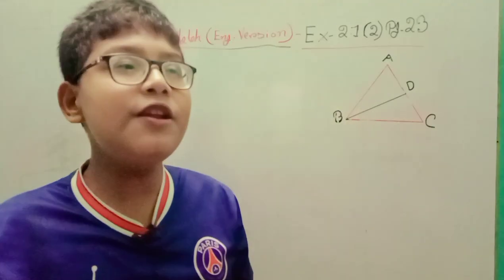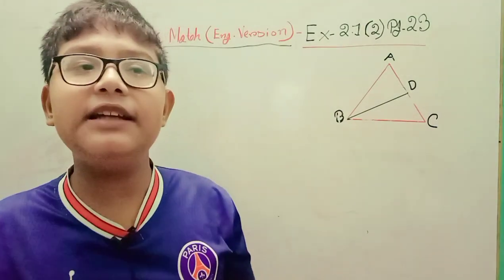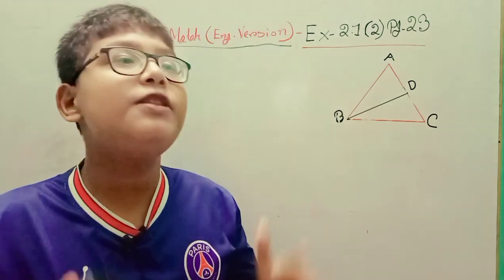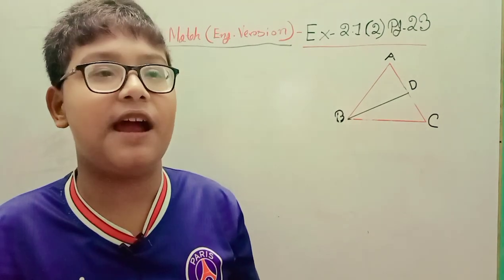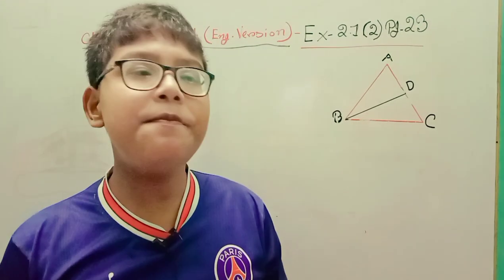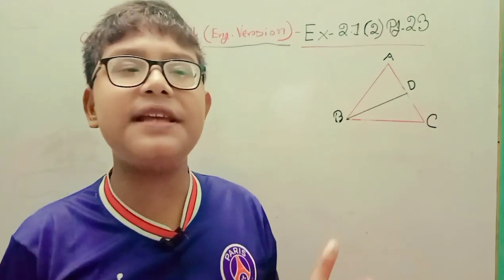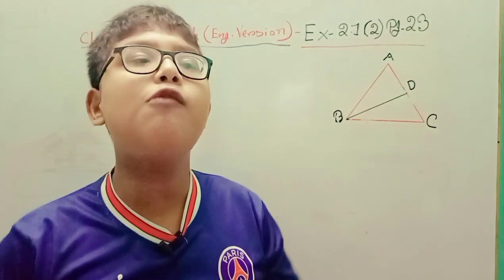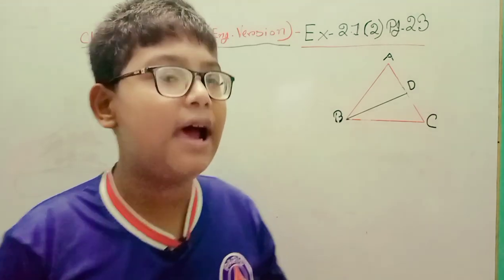We know a median connects the vertex of a triangle with the midpoint of the opposite side, and thus it divides the side equally. It means median BD bisects AC into 2 equal parts, so we can write AD equal to DC.